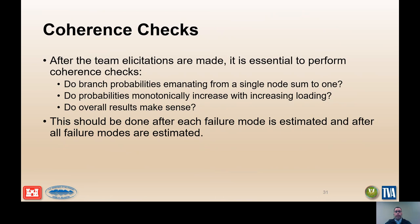After team elicitations are made, it is essential to perform coherence checks to make sure entry rules were not violated, probabilities are monotonically increasing, and an overall gut check based on the evidence is performed. This is typically done after each potential failure mode is estimated and after all failure modes are estimated. After each potential failure mode, plot the system response curve to review its shape and inflection points, and plot the risk on an FN chart. After all potential failure modes are estimated, plot results on an FN chart to see if the overall results for the facility make sense.